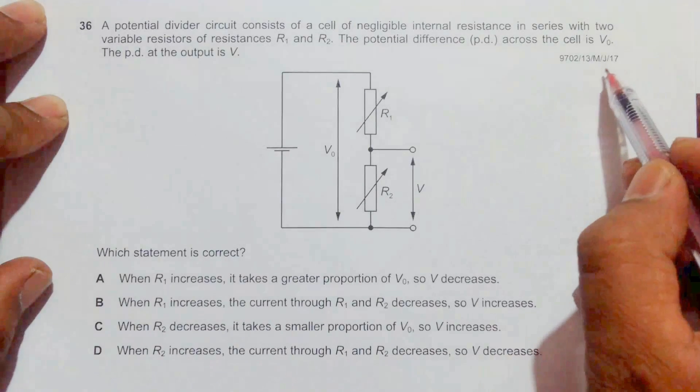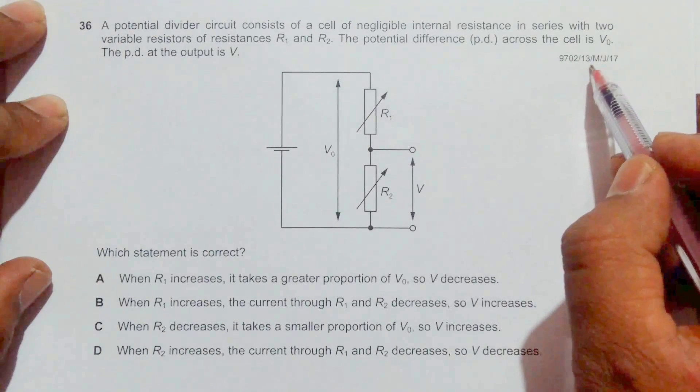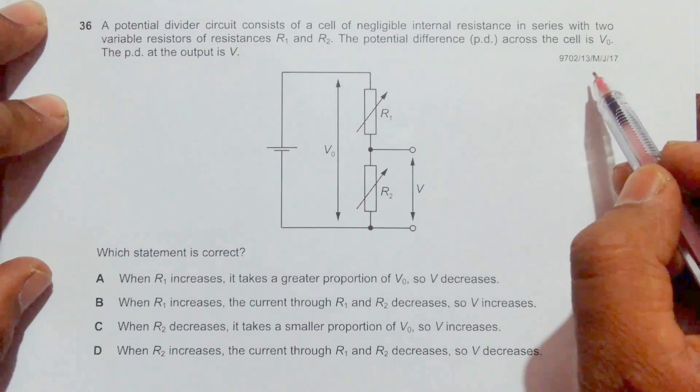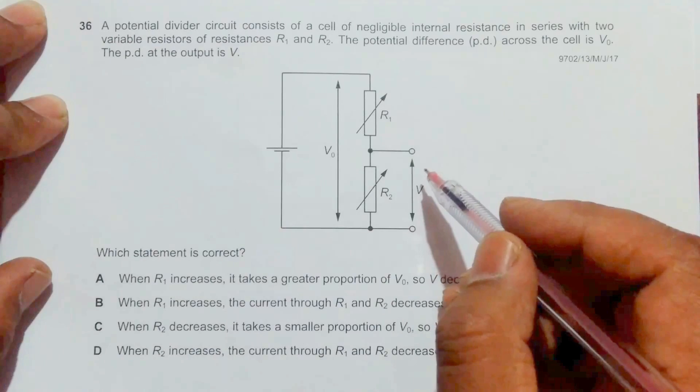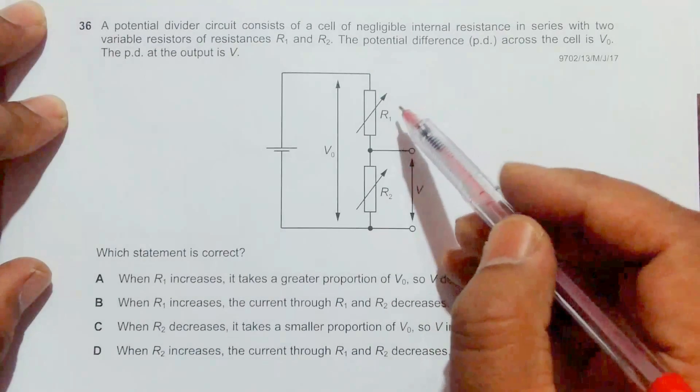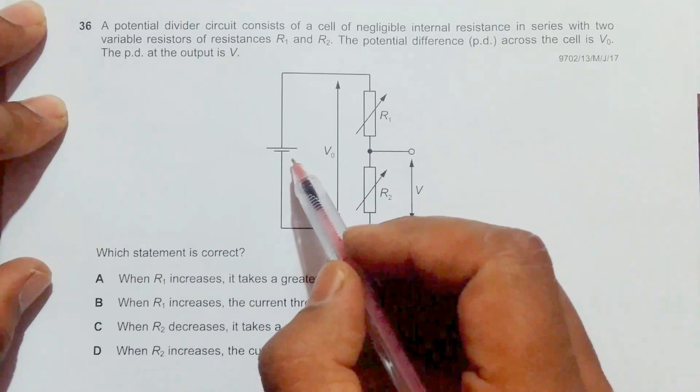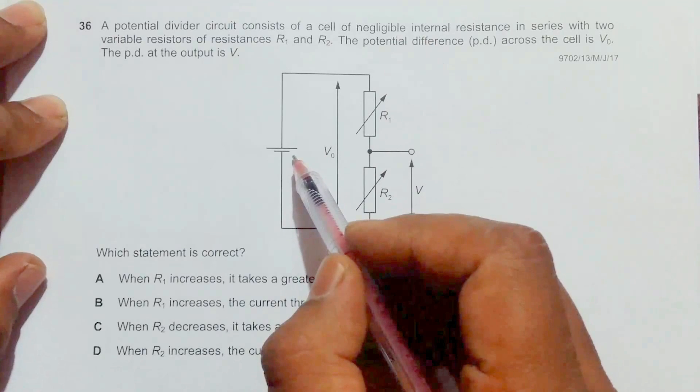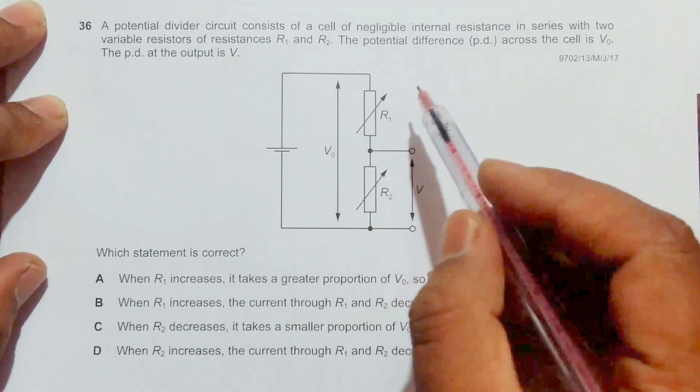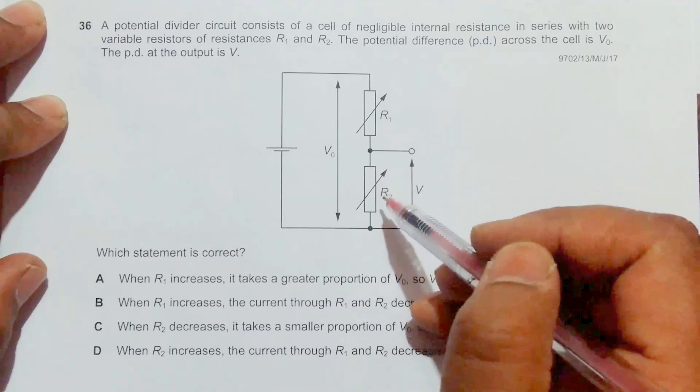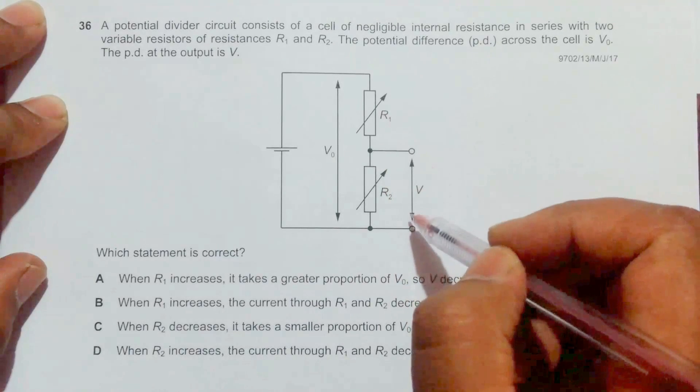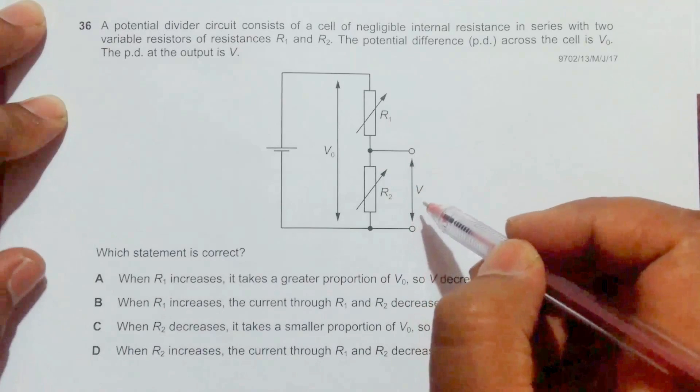This is question 36 from the 2017 major paper 1. We have a potential divider circuit with negligible internal resistance. The resistors R1 and R2 are variable and in series, and the PD across resistance R2 equals V.